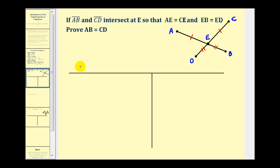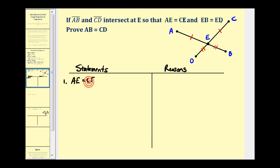For a two-column proof, we'll list the statements on the left that will lead to our desired proof of AB equals CD, and on the right we'll give our reasons or justifications. For number one, we always state the given information: AE is equal to CE and EB is equal to ED. The justification is that it's given.